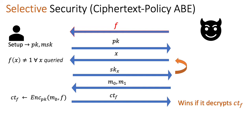Therefore, people actually turn to a weaker security notion called selective security. In the selective security game, the adversary has to first send in the policy it wants to attack before it sees the public key. In full security, this happens in the challenge phase where the adversary can see the public key, can make queries, and then chooses the messages and the policy. Here, the adversary must send in this policy before it even sees any public parameters; everything else stays the same.